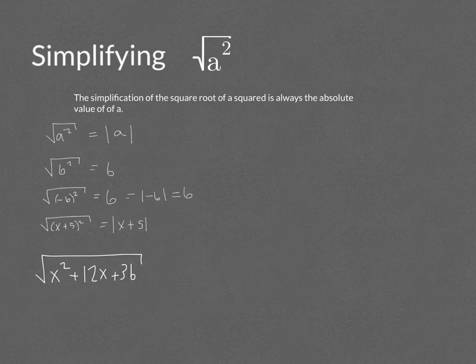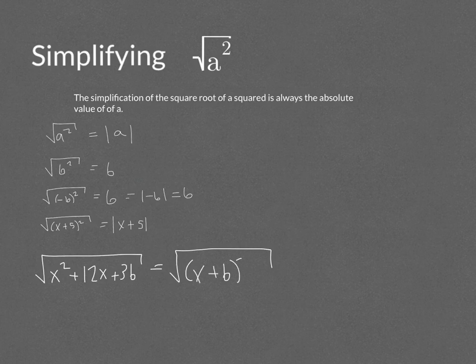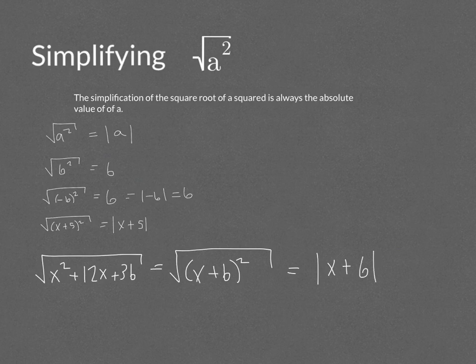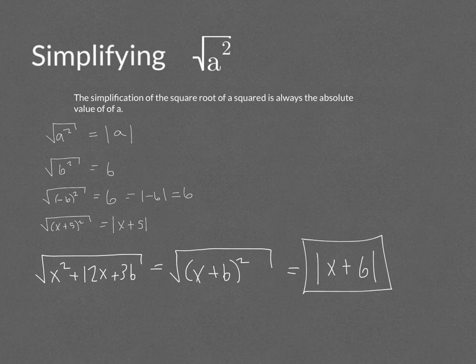Another example: if we can rewrite the inside as x plus 6 squared, the square root and the square cancel out and we're left with the absolute value of x plus 6. Whenever you take the square root of something squared, make sure you have an absolute value. If it's a constant you can just compute the absolute value, but if you're left with a variable, the final answer will still contain absolute values.